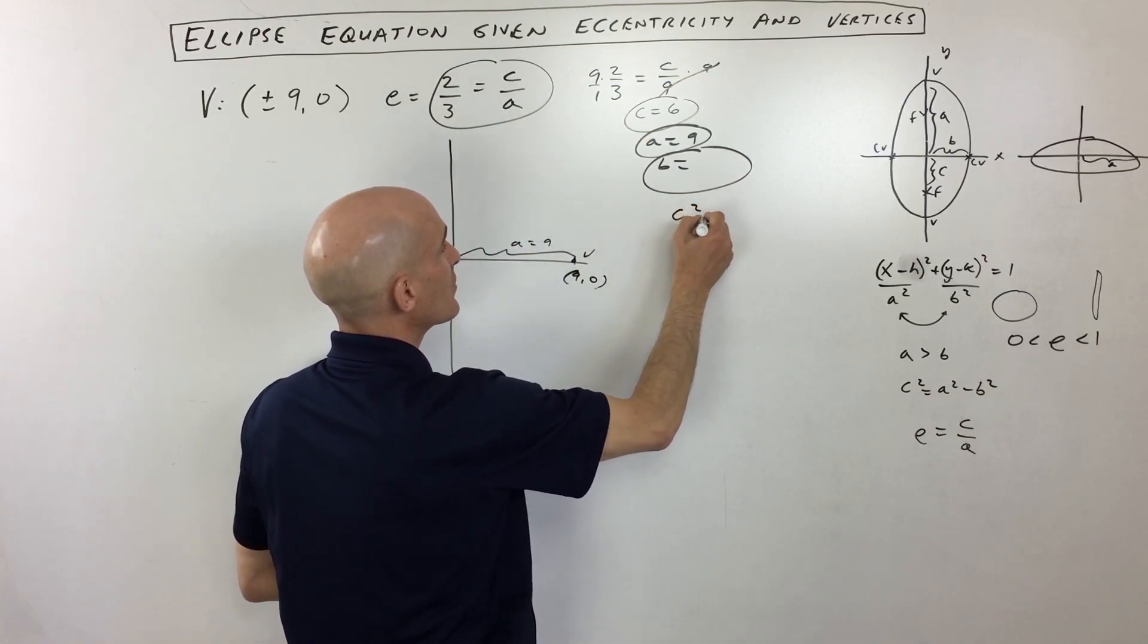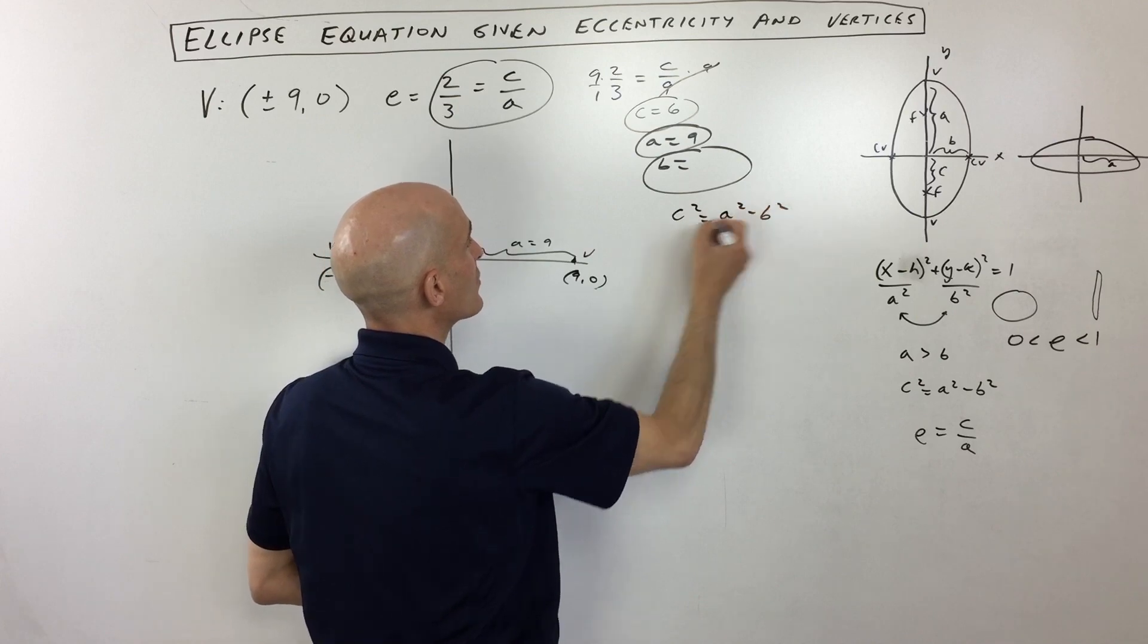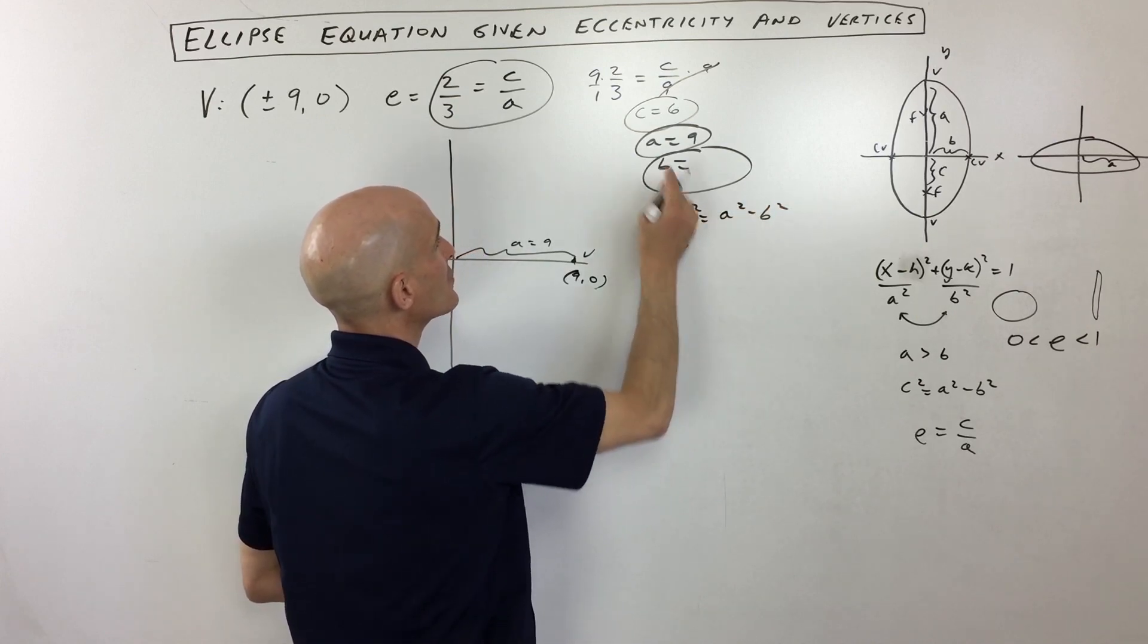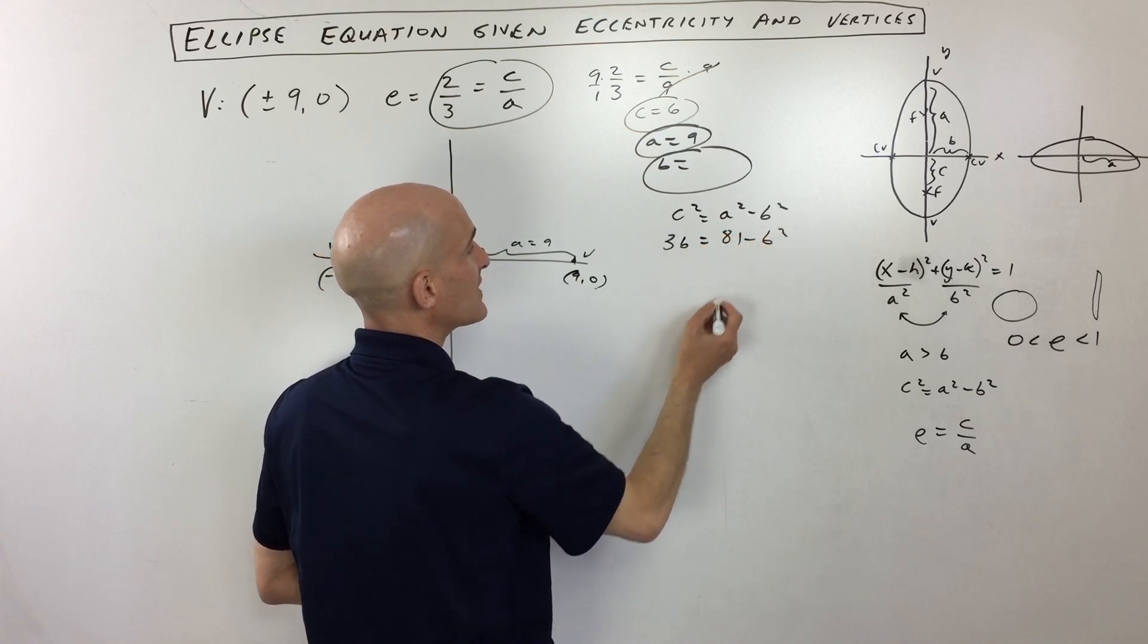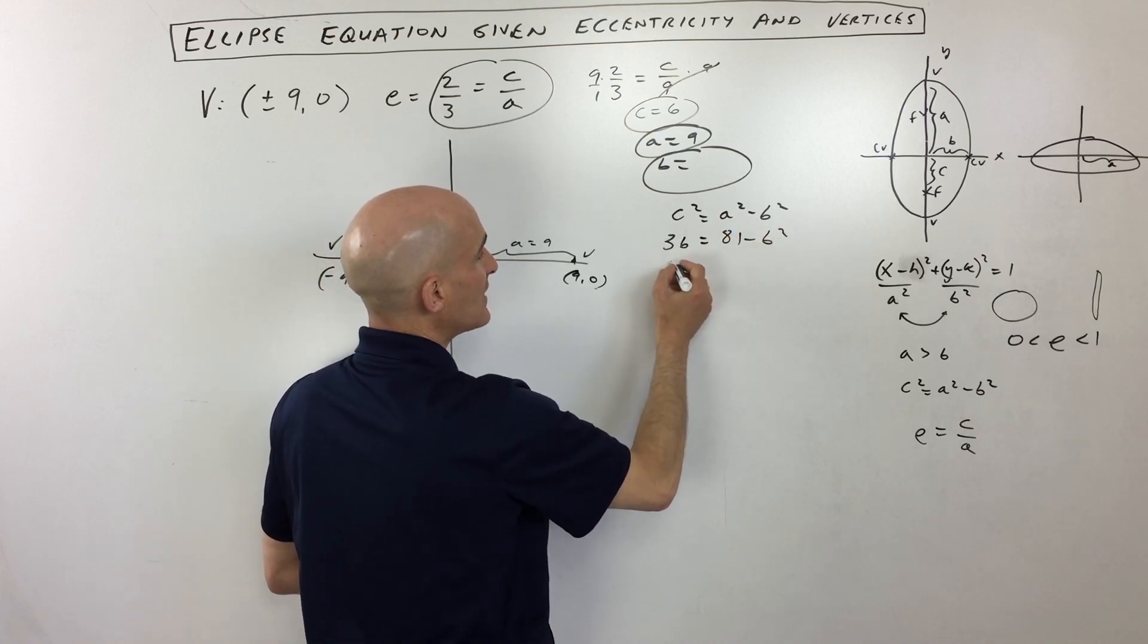So we've got c squared equals a squared minus b squared. C squared would be six squared, which is 36. A squared is nine squared, which is 81, minus b squared. And let's see, if we subtract 81, we get negative 45 equals negative b squared.